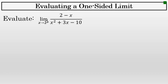In this case, finding the limit as x approaches 2 from the right, substituting 2 for x: 2 minus 2 is 0 in the numerator, and 2 squared (4) plus 6 minus 10 is 0 in the denominator. Direct substitution yields 0 over 0.